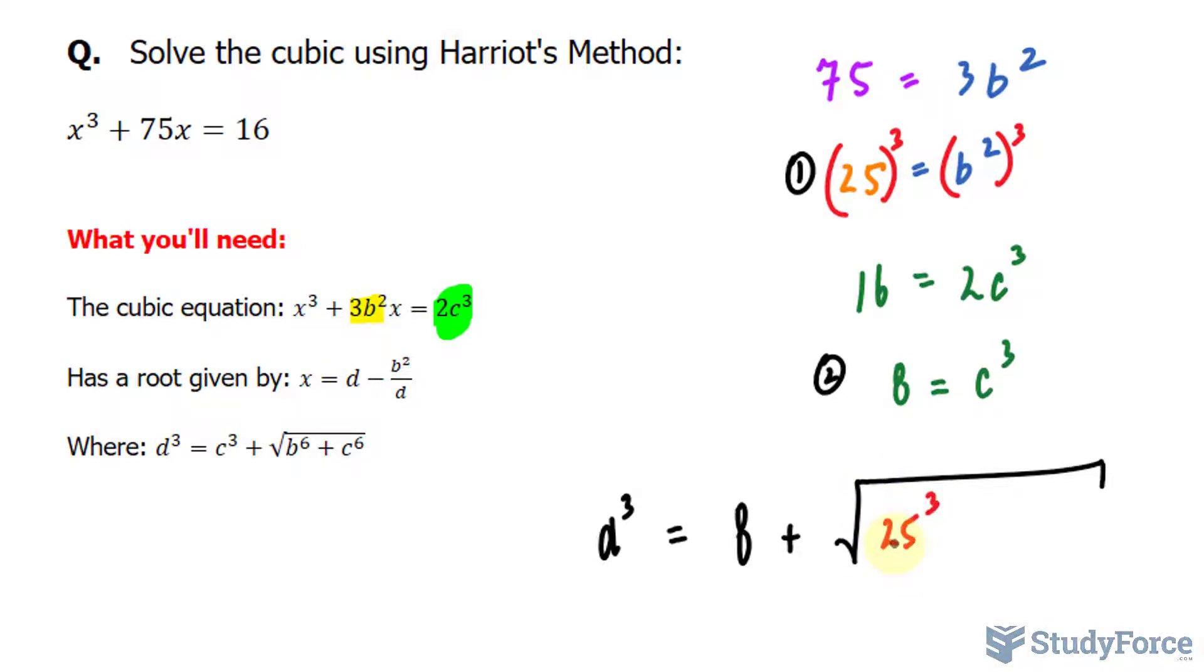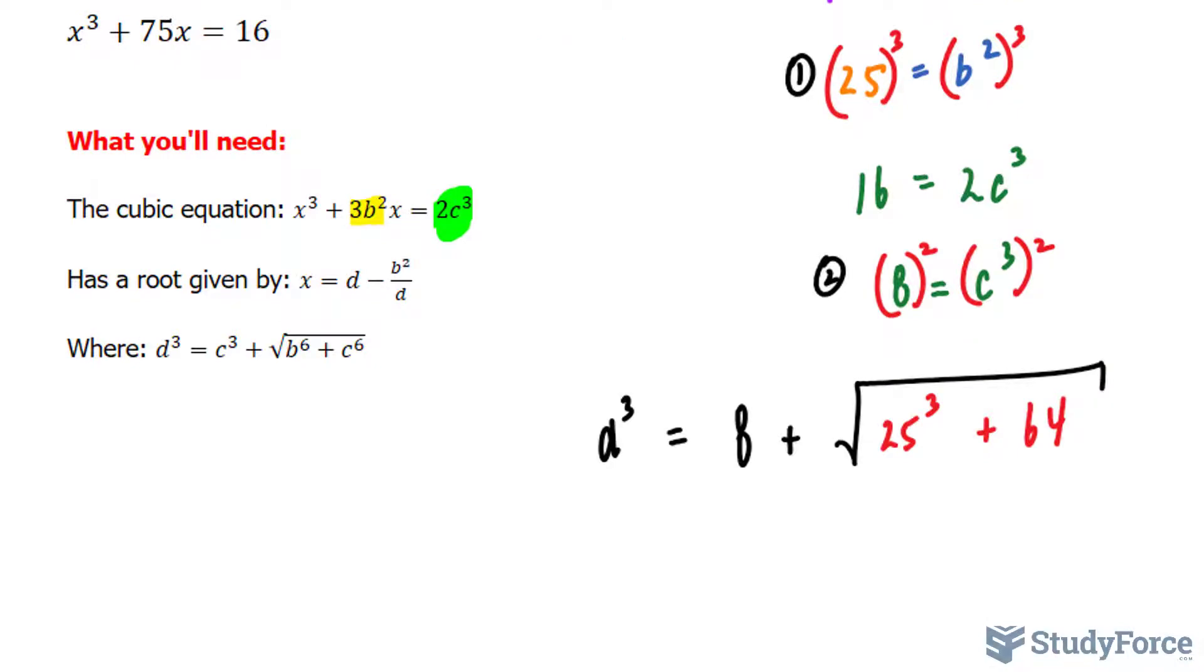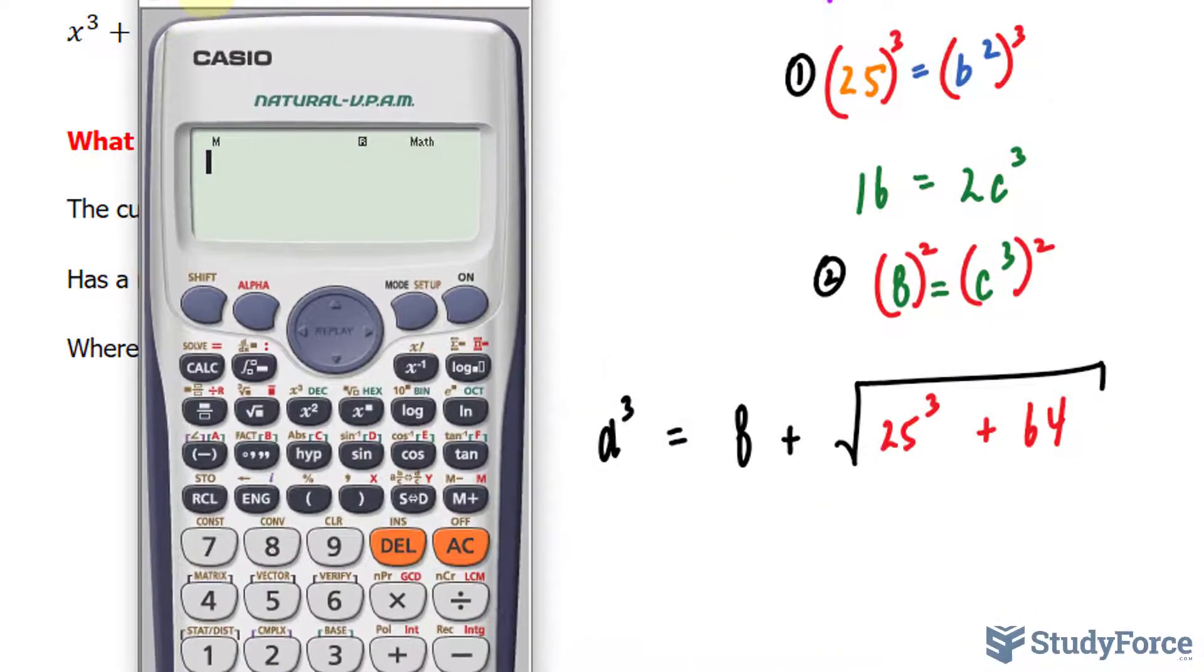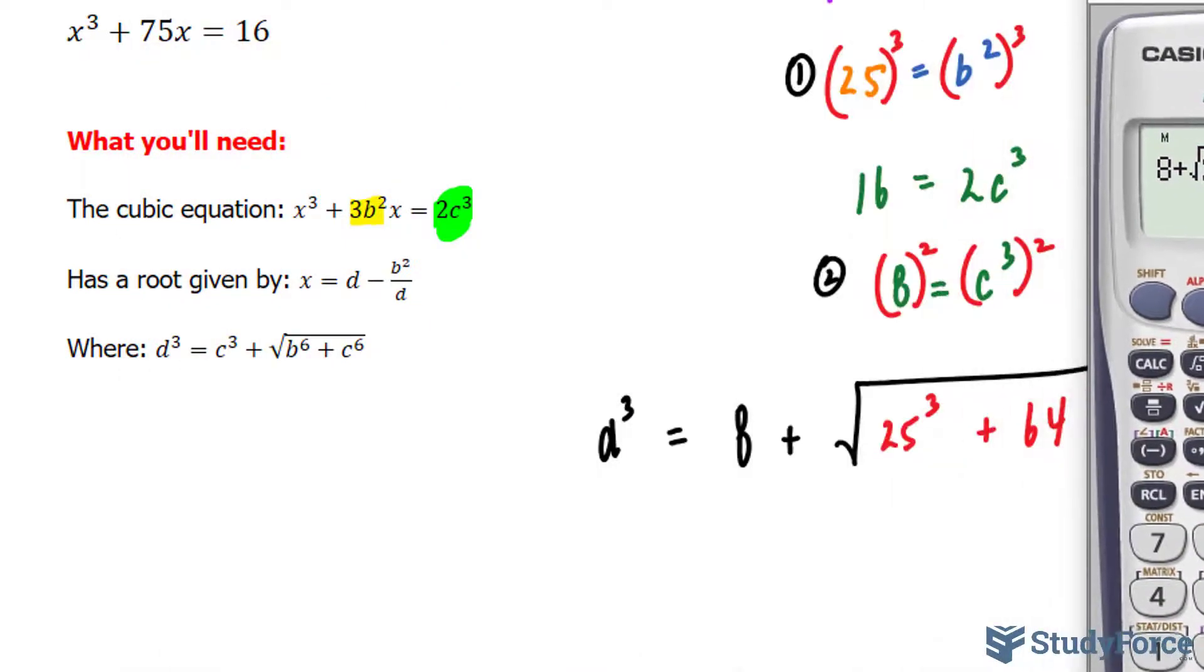I'll apply the same logic to find c⁶, where I raise both sides to the power of 2. c³ to the power of 2 is c⁶. And we have 8², which is 64, plus 64. So let's use our calculator to find out what d³ is, 8 plus the square root of 25³, plus 64. This gives us an output of 133.2557, et cetera.